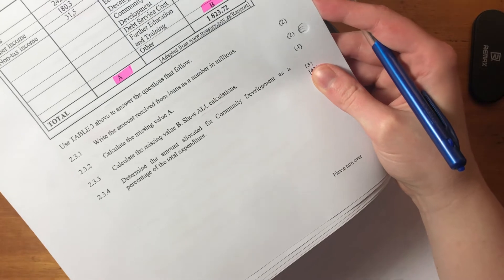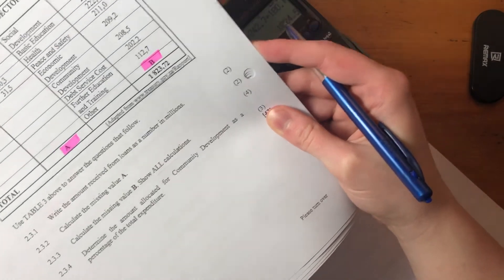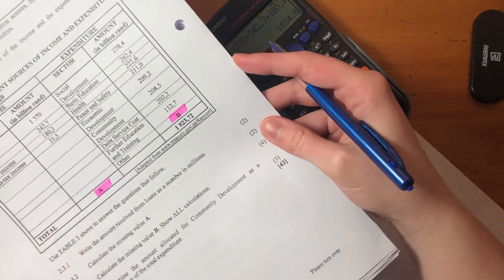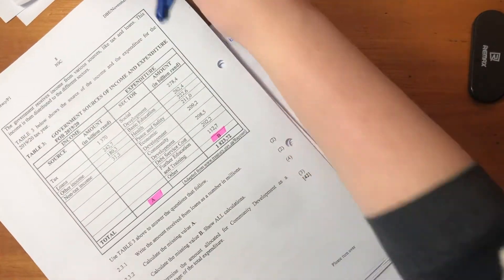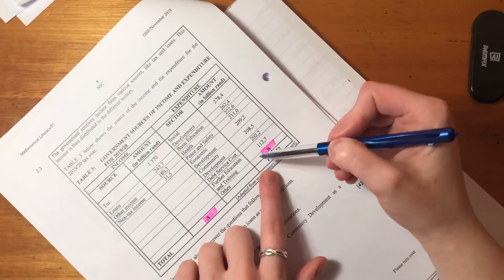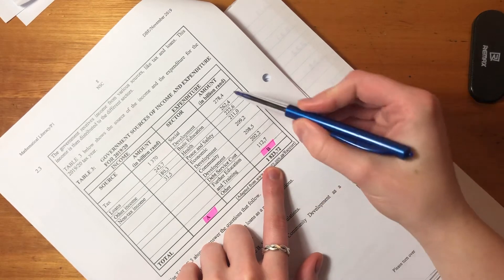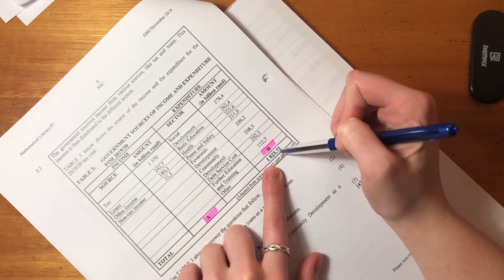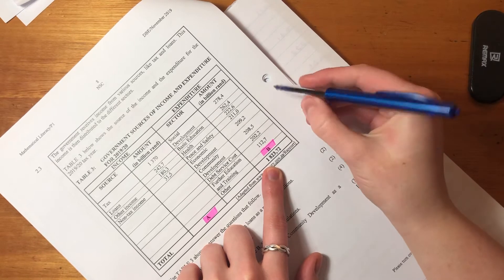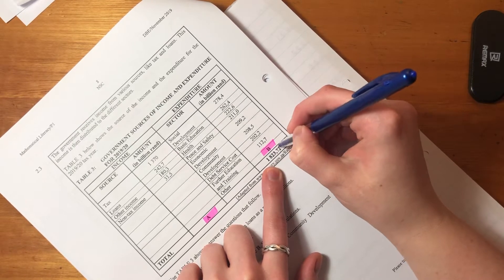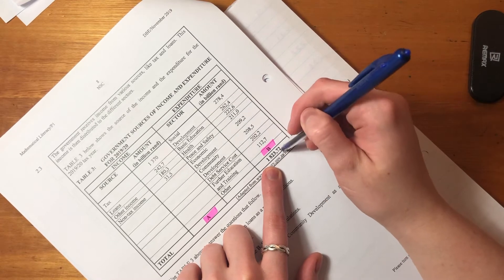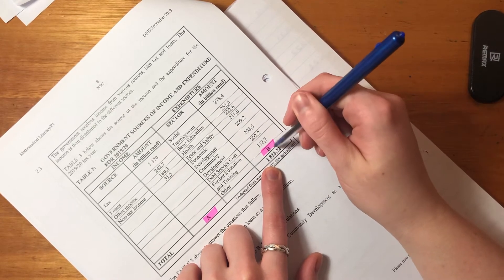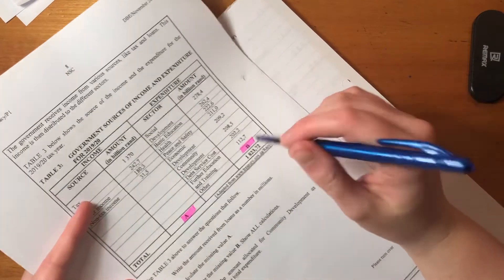Now we've done A and we're happy with that. Let's now move on to the next question. Now it says calculate the missing value B, show all your calculations. This is a slightly trickier way of going about calculating than the previous question, because here we're given the total and we're given all the other numbers that are included in the total except for B. So what we need to do is we need to take the total, take out everything that is included in the total, and what is left will be the value of B.